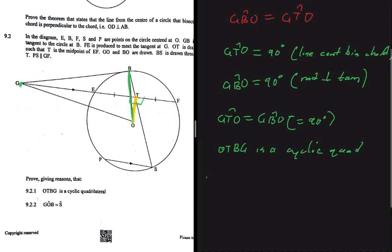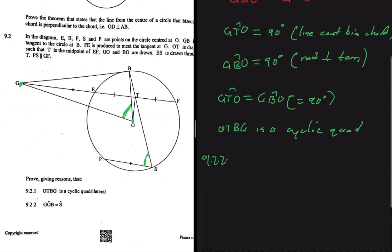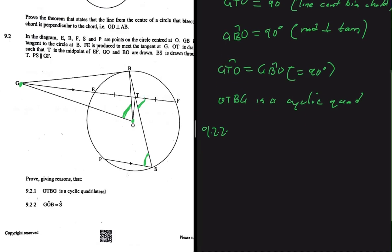We've proved beyond reasonable doubt that OTBG is a cyclic quad, so now we can do 9.2.2. We need to prove that angle GOB equals angle S. Looking at the diagram, angle S equals angle STF because they are alternate angles.